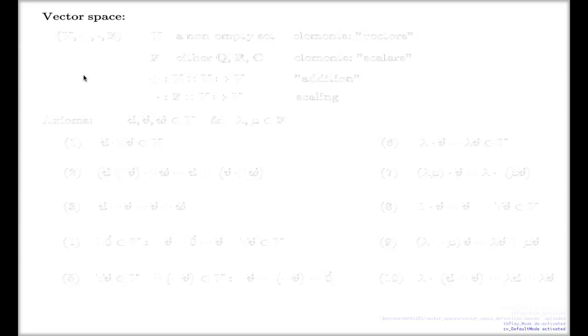We're going to take these objects, look at them from a unified angle, and single out or filter out the set of minimal properties which are common for these objects. This set of minimal properties we will abstractly call vector spaces, and we're going to look at them with more detail a bit later.